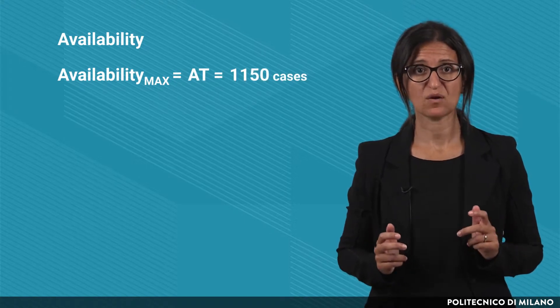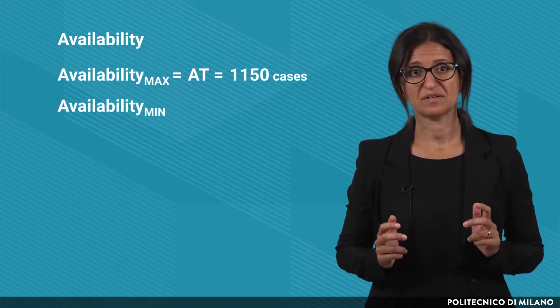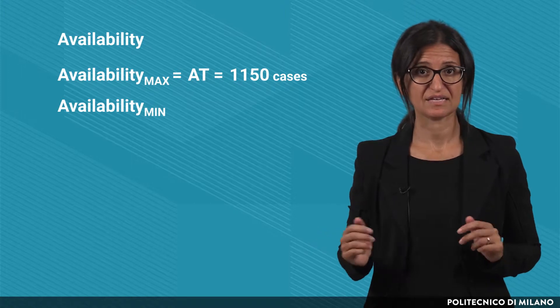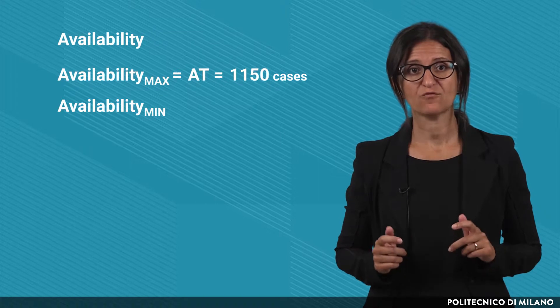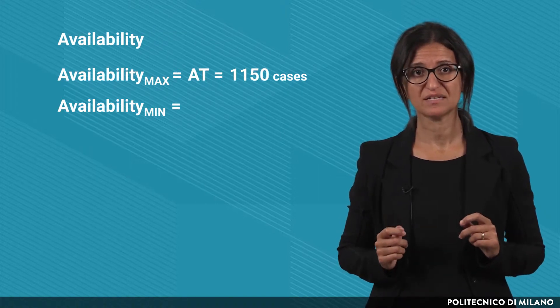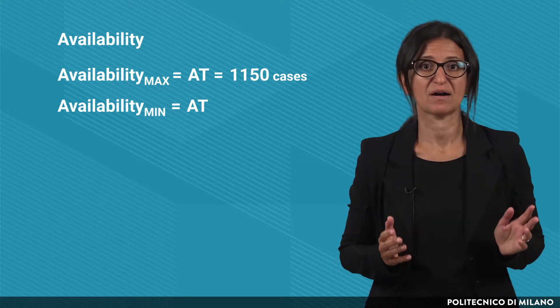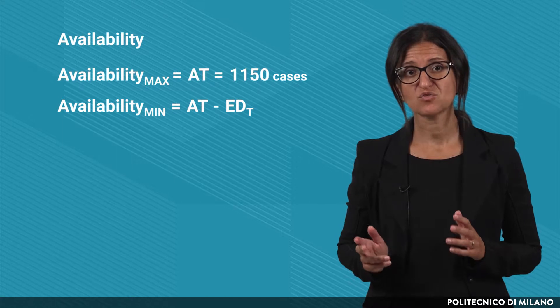Let's start from the availability. Its maximum value is equal to the availability target, and so 1150 cases. The minimum value of the availability is reached after a period of time t, 6 days, when there is the issue of the new order. Therefore, we can find the minimum value of the availability as the difference between the availability target — that is the maximum level of availability — and the expected demand during t.